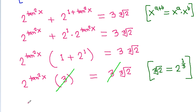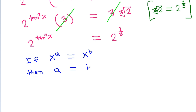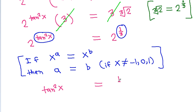So 2 power tan squared x is equal to 2 power 1 by 3. Since if x power a equals x power b then a equals b (provided x is not equal to minus 1, 0, or 1), we get tan squared x is equal to 1 by 3.